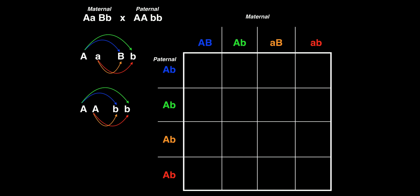Welcome back to Genetics on Catalyst University. My name is Kevin Tokoff. In this video we're going to do a dihybrid cross example. I recommend that you either know about Punnett squares and monohybrid crosses, or go back and watch the video on that first, because dihybrid crosses are a little bit more challenging conceptually and are an extension of the monohybrid crosses from the previous video. If you're ready, we're going to talk about dihybrid crosses.